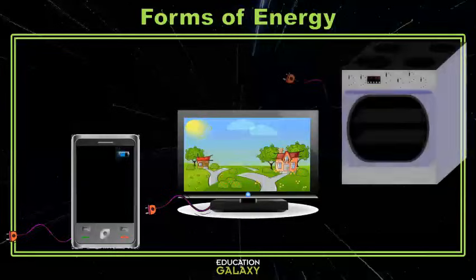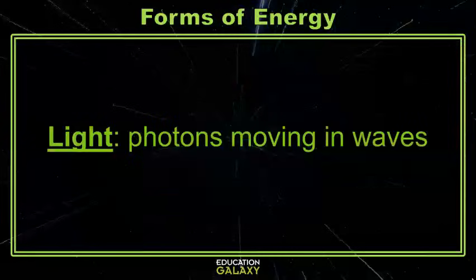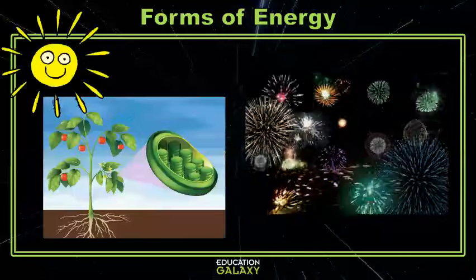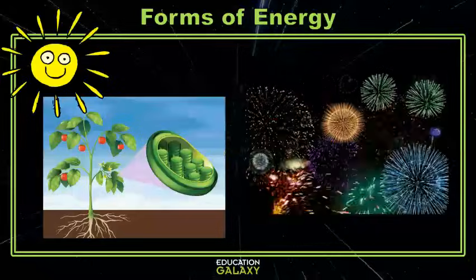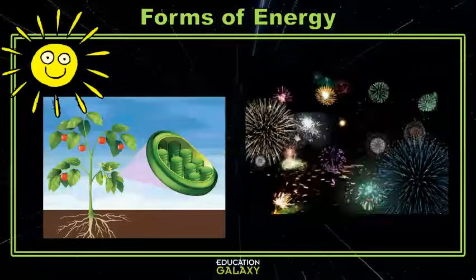Even when you turn on your electric oven or microwave. Light energy is the only form of energy that we can see. Light is a form of energy that moves in waves and allows us to see different things. This is also the form of energy when the sun's light waves shine down on a plant, or when a fireworks show lights up the night sky.